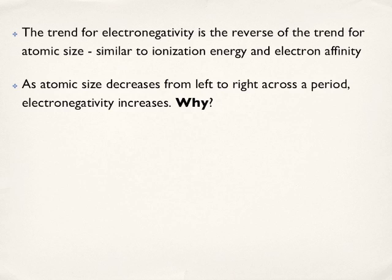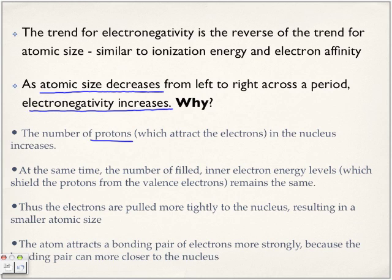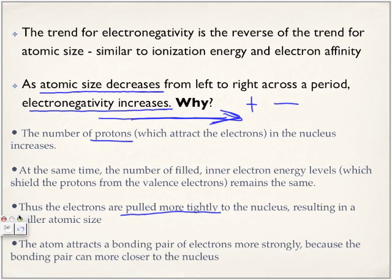As atomic size decreases, electronegativity increases. Why? Because the number of protons in the nucleus increases as we move across the periodic table — the atomic number increases, which means the number of protons increases. At the same time, the number of filled inner electron energy levels remains the same. We're adding protons and electrons, and the atom is pulled more tightly to the nucleus, resulting in a smaller atomic size. In turn, the atom attracts a bonding pair of electrons more strongly because the bonding pair can move closer to the nucleus.